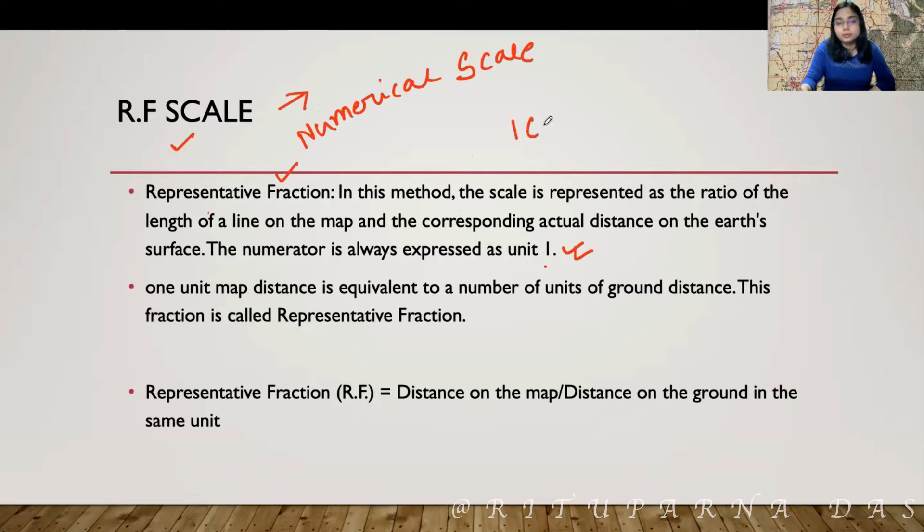If I am using the unit 1 cm, here it will be again 10,000 cm. We cannot change the unit. That is why this scale is also known as universal scale. Anyone in the world can use it and they can use their own unit. That is one positive point of the RF scale.